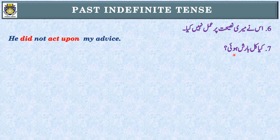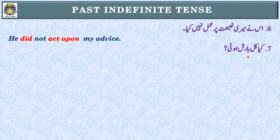Sentence number seven: 'Did it rain yesterday?' First step: identification of tense — past indefinite tense. For weather, time, and rain we use 'it' as subject. Simple sentence: 'It rained yesterday.' Negative: 'It did not rain.' Interrogative: 'Did it rain yesterday?' — with a question mark.